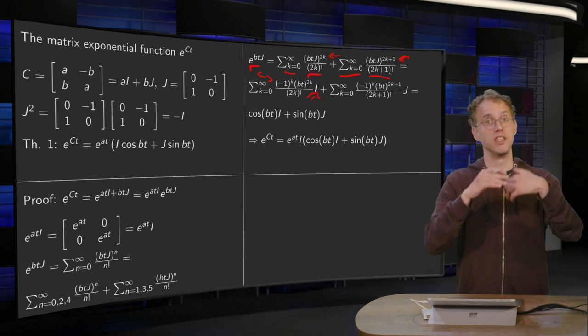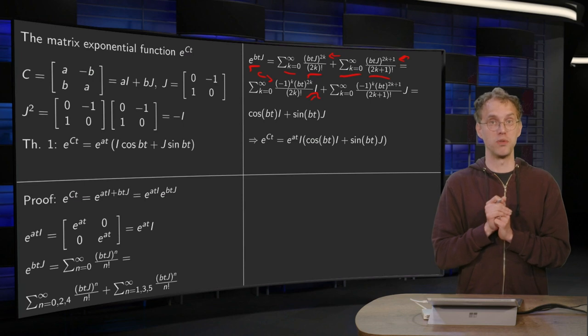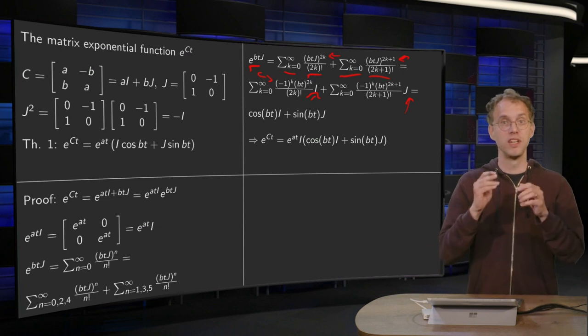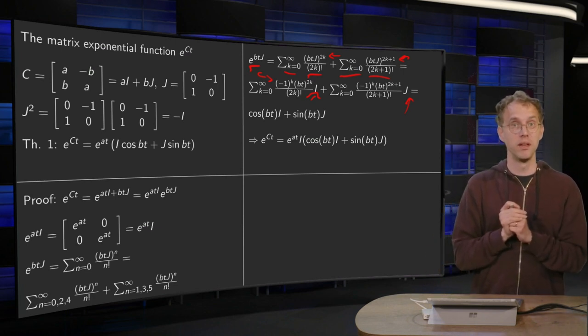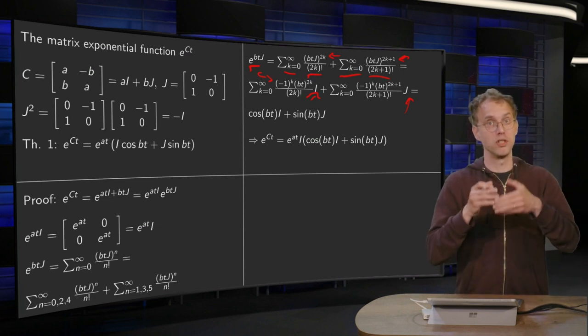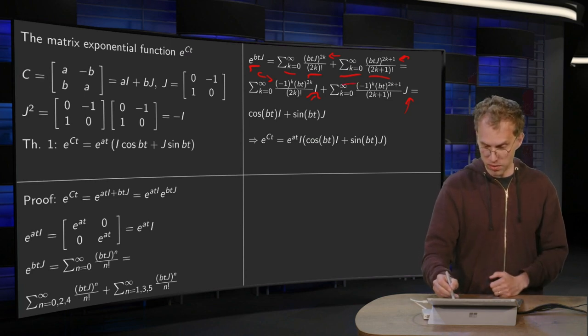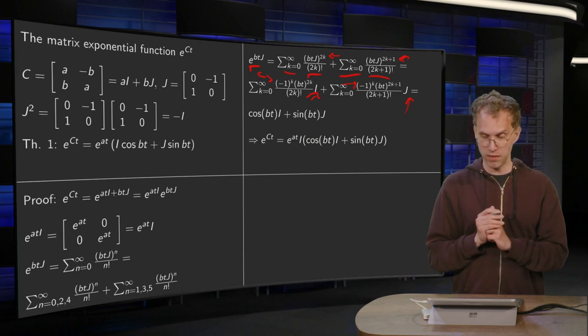And similarly for the j to the power 2k plus 1, there we have a j times j to the power 2k. But j to the power 2k was just a minus 1 to the power k times identity. So we get a minus 1 to the power k, and identity times j is just j, of course.